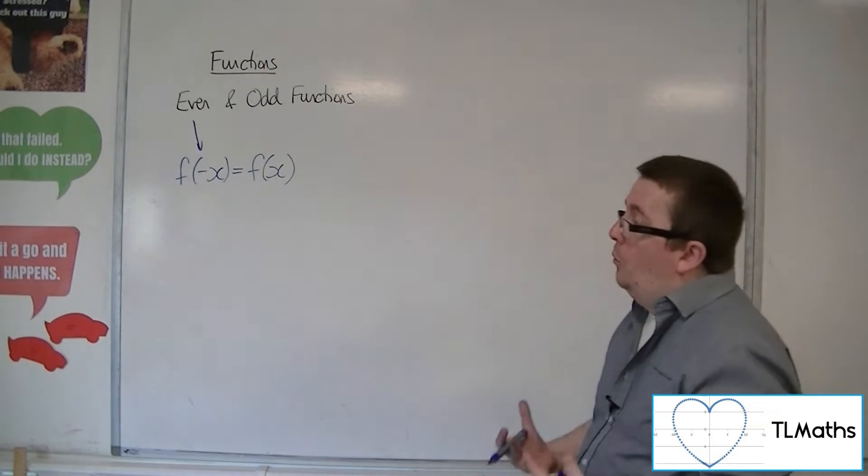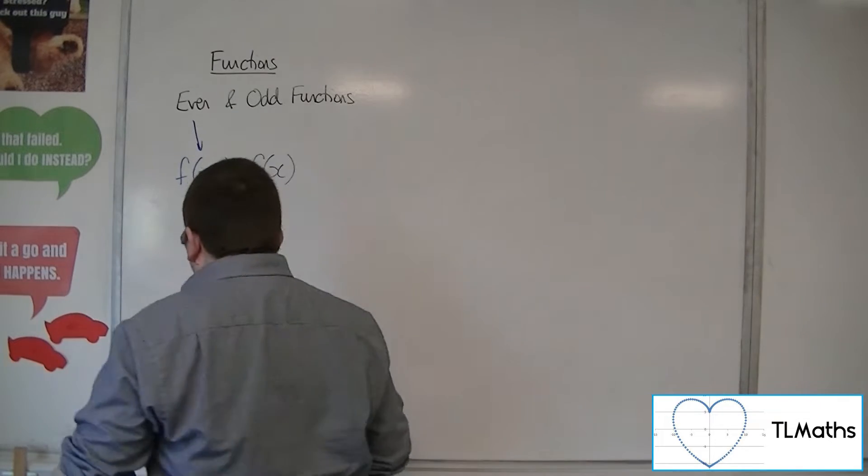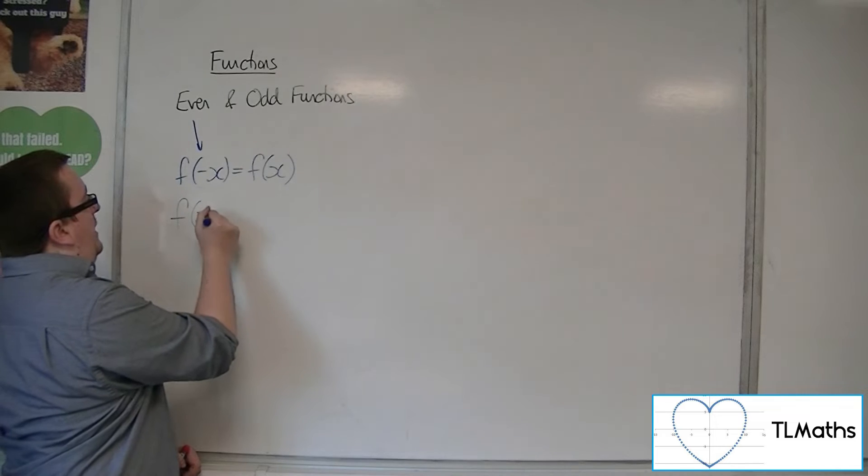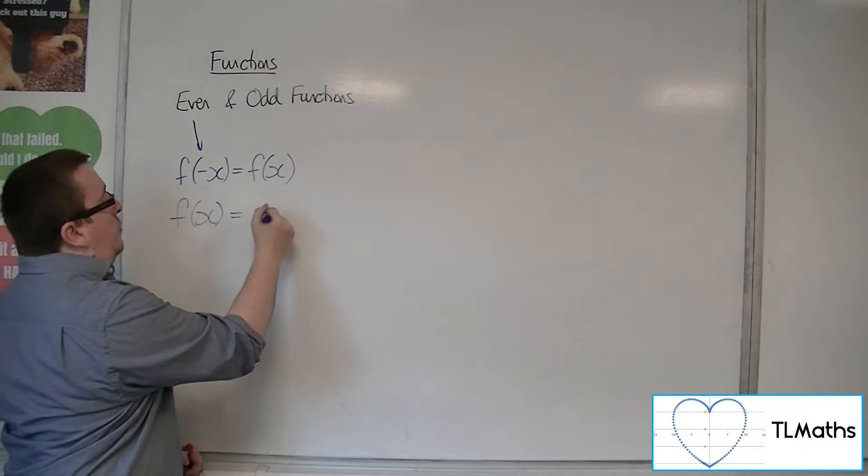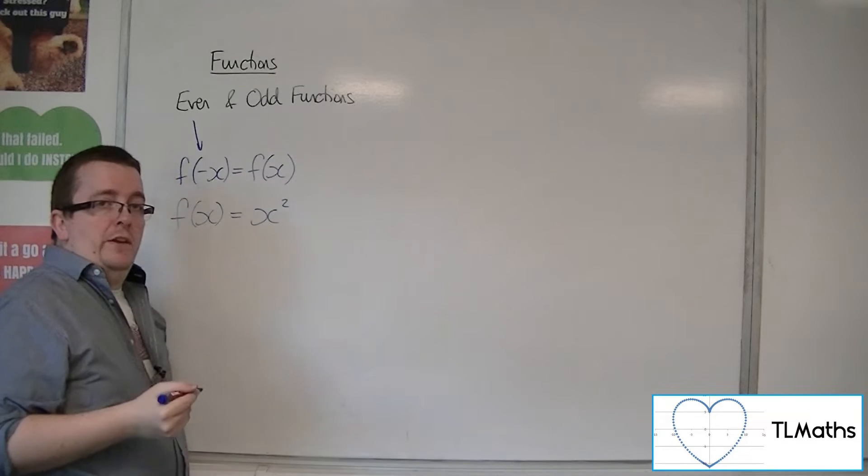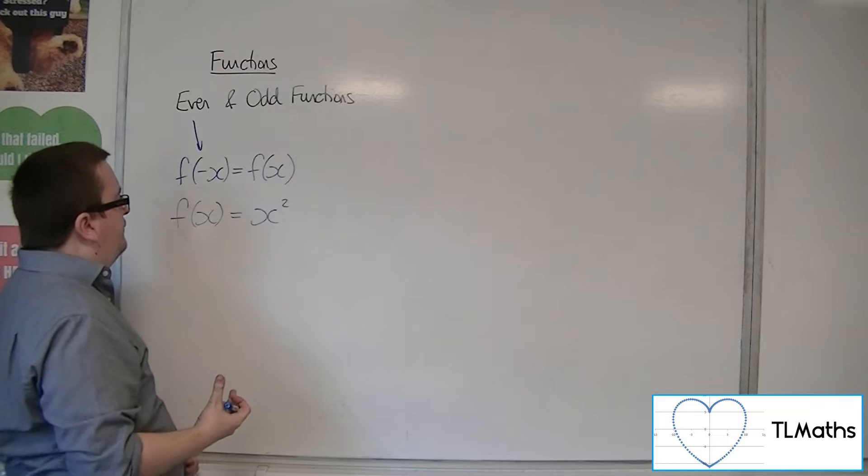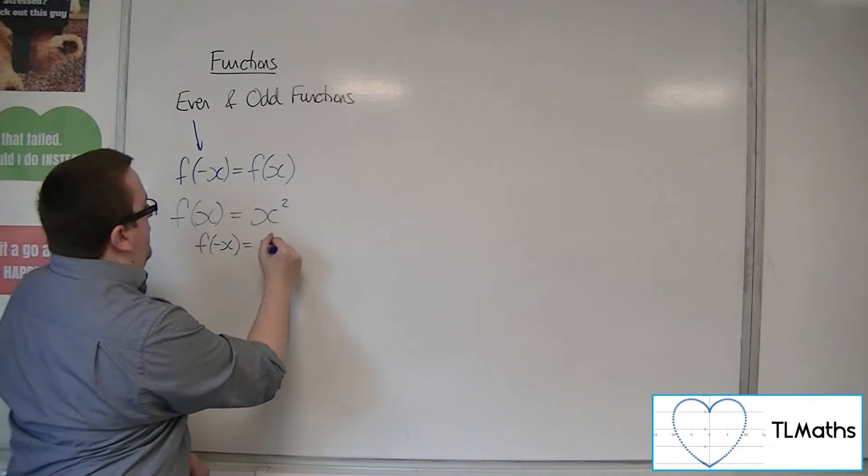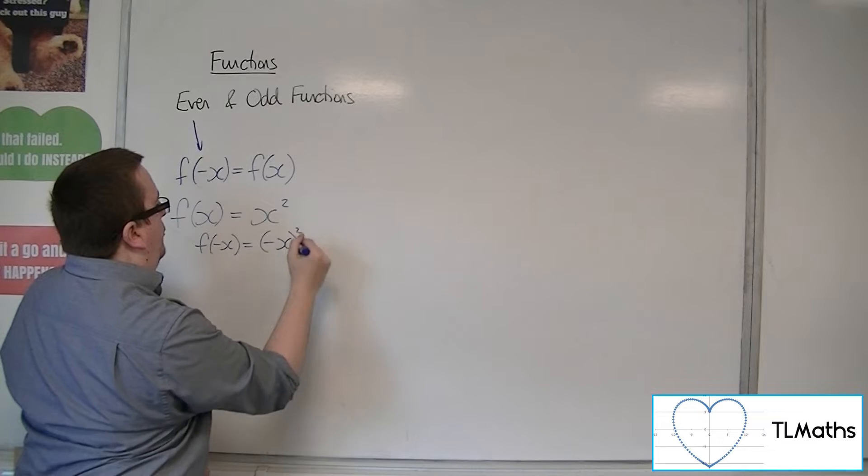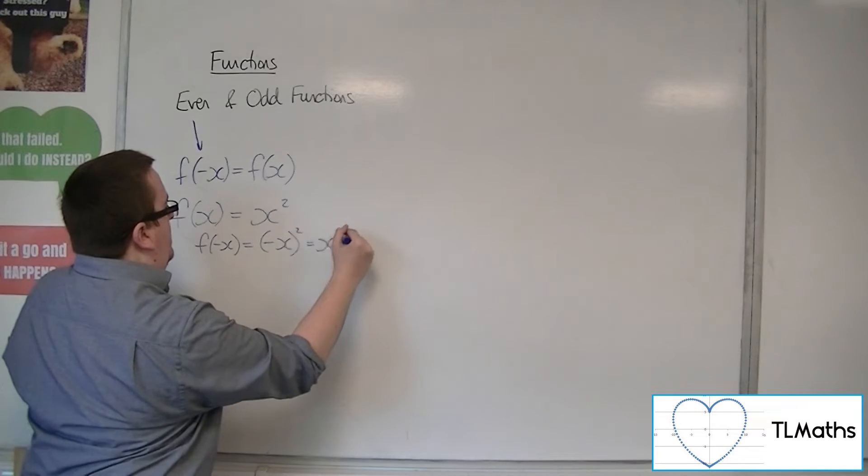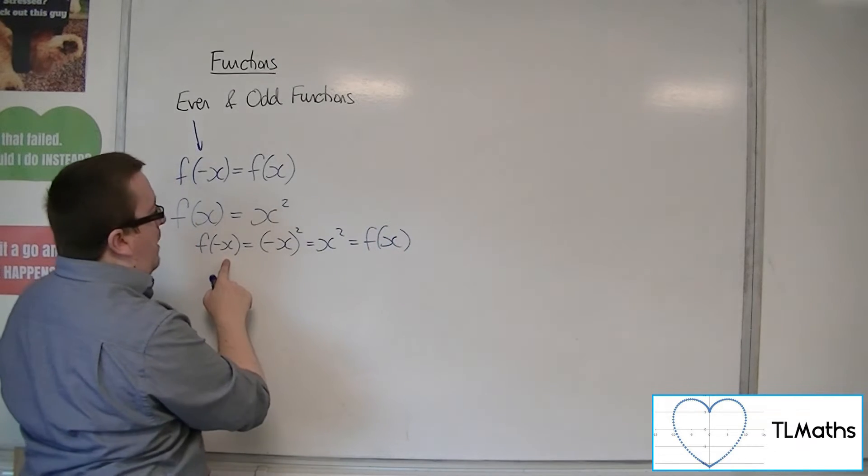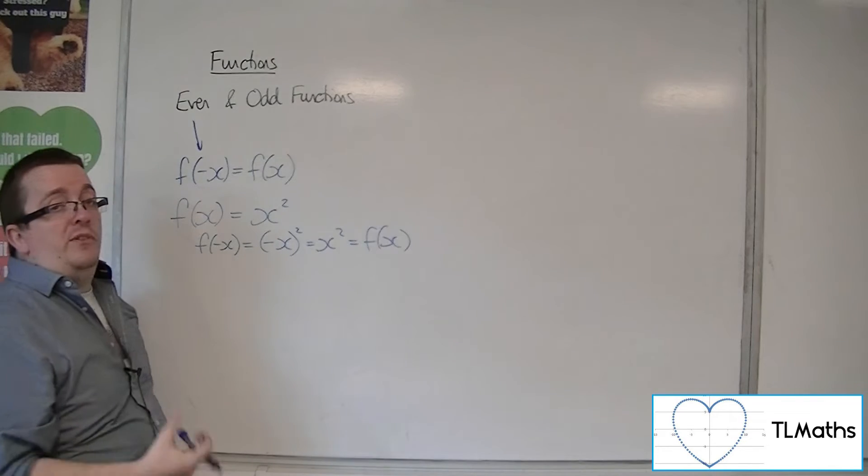So what that would mean would be something like f of x is equal to x squared. Okay, so if I looked at that function, then f of minus x is minus x all squared, which would be the same as x squared.